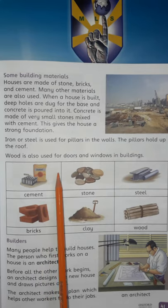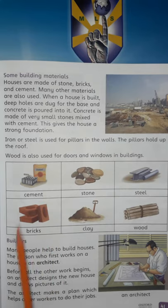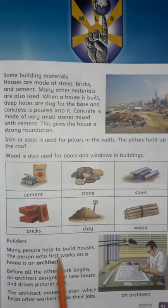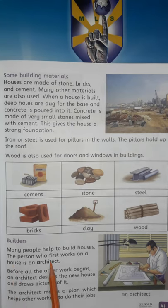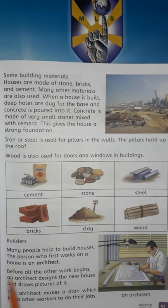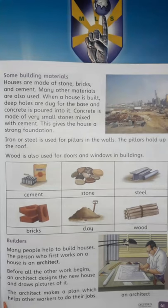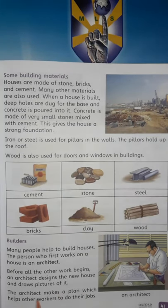Cement is also used to make walls. Builders: many people help to build houses. The first person who works on a house is an architect. Before all other work begins, an architect designs the new house and draws a picture of it. Here is an architect drawing a picture of the house.